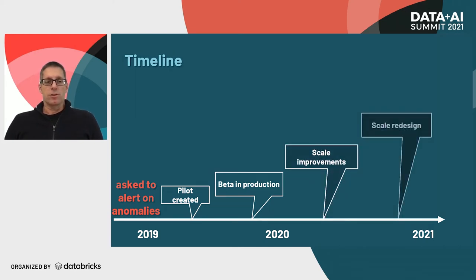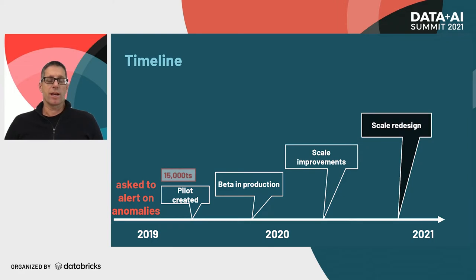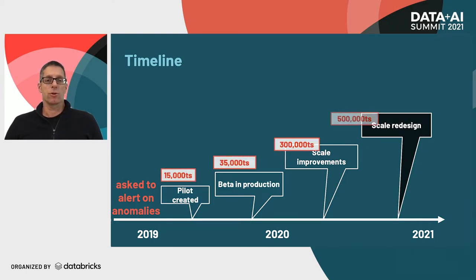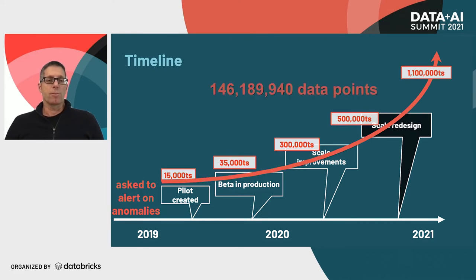In terms of the amount of data, when we started out we had 15,000 time series. This grew over time, and today we have over 1.1 million time series — and this is growing daily. In total, we have about 150 million data points in the system.